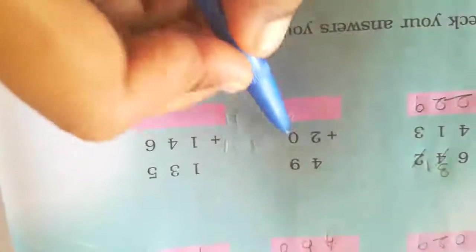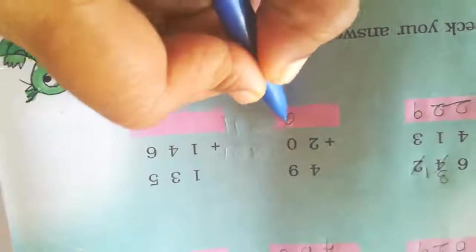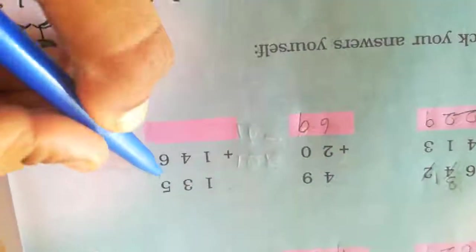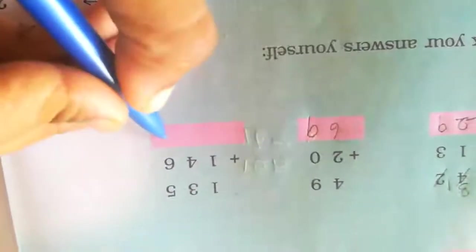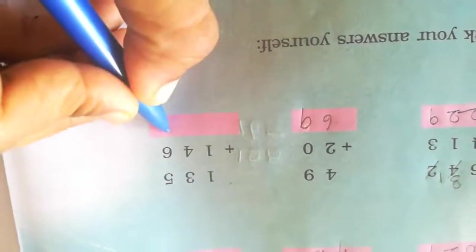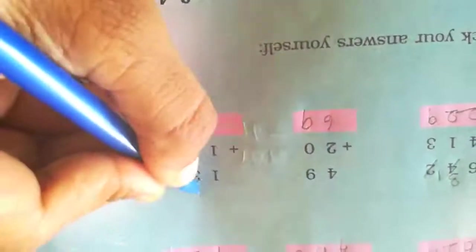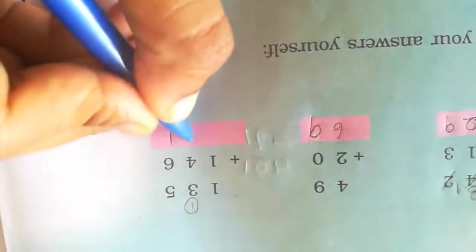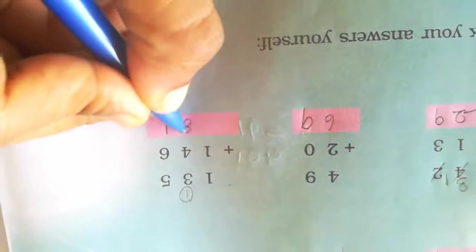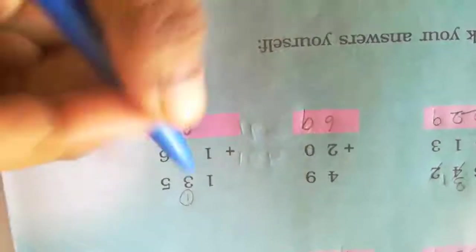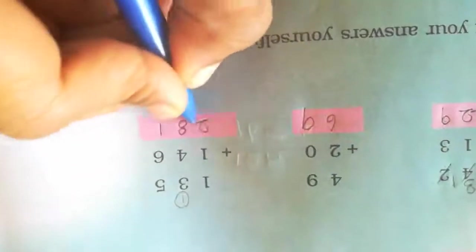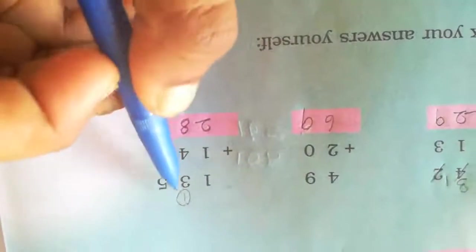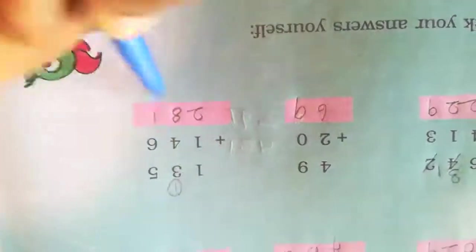Now it's addition. 9 plus 0 is 9. 4 plus 2 is 6. 5 plus 6 is 11, carry 1. 3 plus 1 is 4, plus 4 is 8. 1 plus 1 is 2. Next, 4 plus 4 is 8.